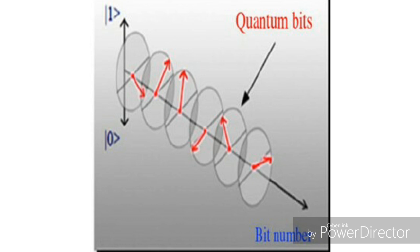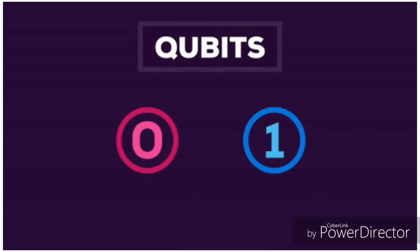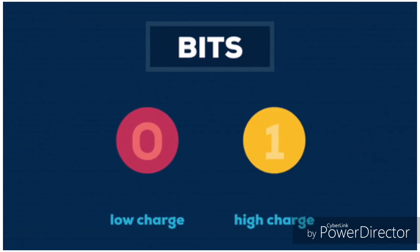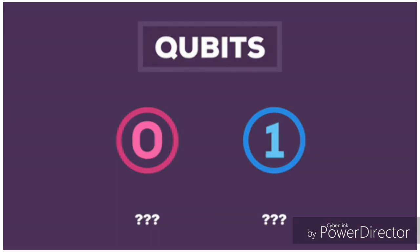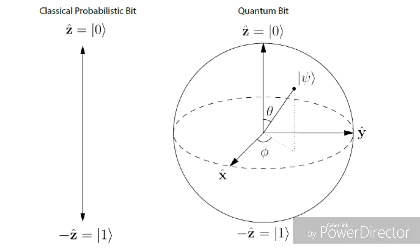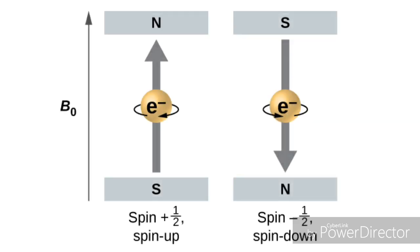This superposition of states |0⟩ and |1⟩ is called a qubit, similar to a bit in classical computing. A qubit is a two-state quantum mechanical system. Another example is the spin of an electron, where the two levels can be taken as spin-up and spin-down. At any given point of time, the electron is in a superposition of spin-up and spin-down, with certain probabilities of being in each state.